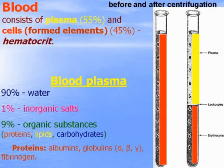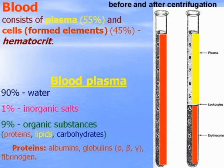Blood consists of plasma and cells — formed elements. This correlation is called a hematocrit. This is blood before and after centrifugation. After centrifugation it divides into two parts: red precipitate, which is formed elements, about 45 percent, and plasma, 55 percent.